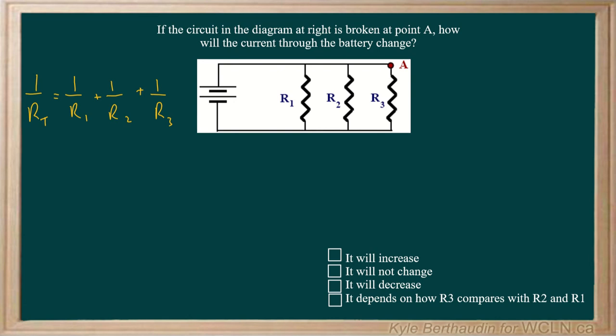There's another thing that we know. We are looking to determine how the current is going to change across the battery. So imagine we put a voltmeter in right here, and we measure the voltage. We can determine the current through the battery if we know the equivalent resistance. That comes from Ohm's Law.